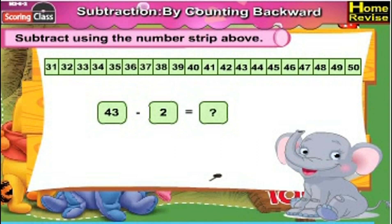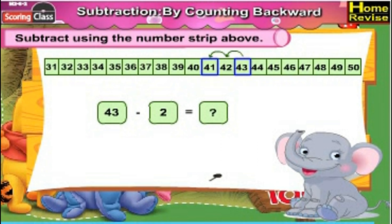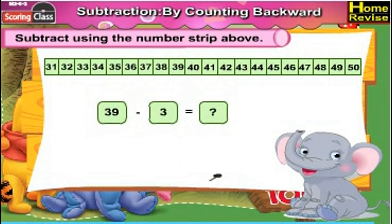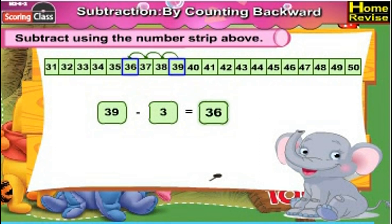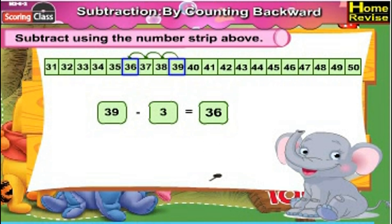43 minus 2: subtracting 2 means going two places back, so 43 minus 2 is 41. 39 minus 3: we need to subtract 3 from 39. Subtracting 3 means going three places back, so 39 minus 3 is 36.